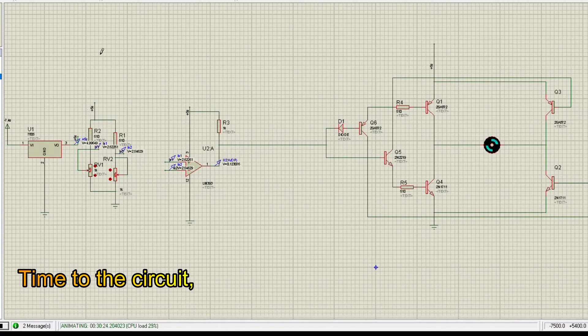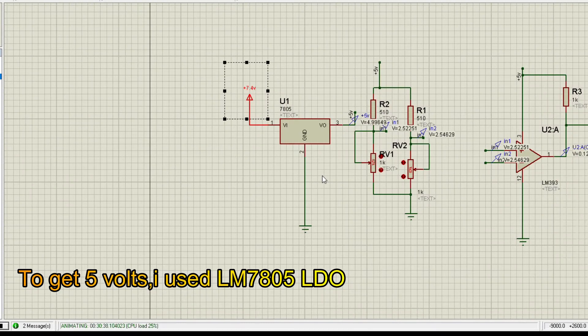Let's check the circuit. To get 5 volts, I use LM7805 LDO.